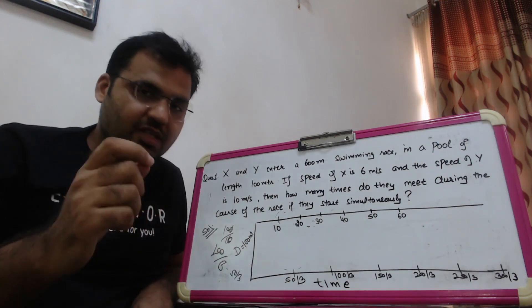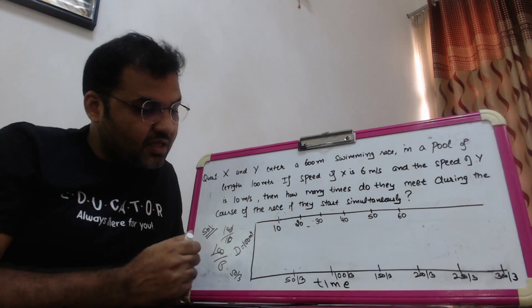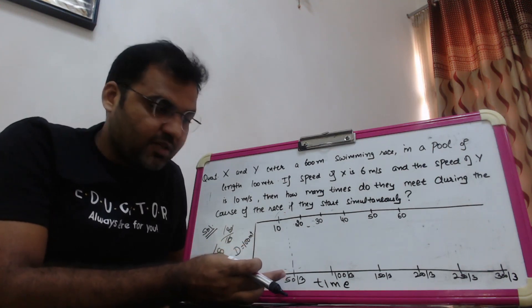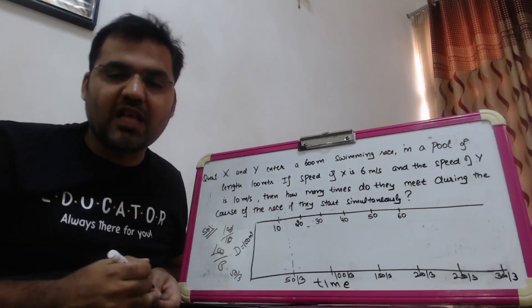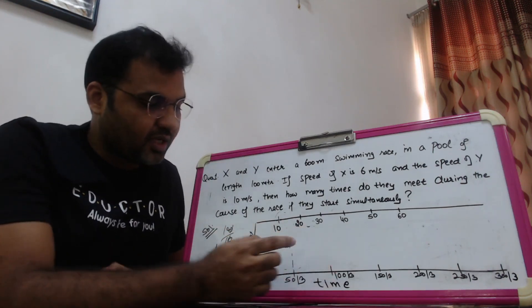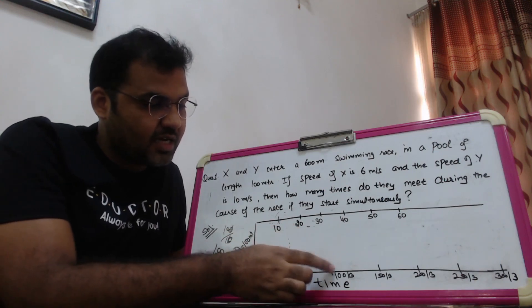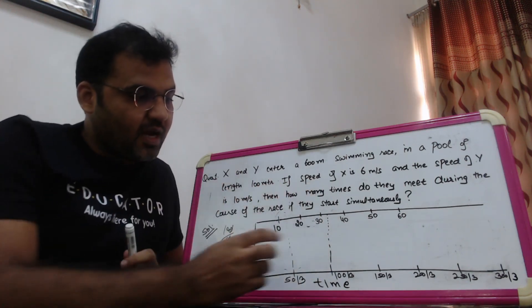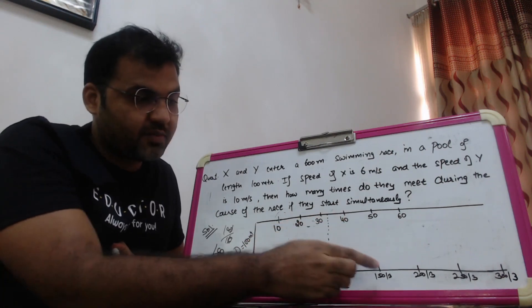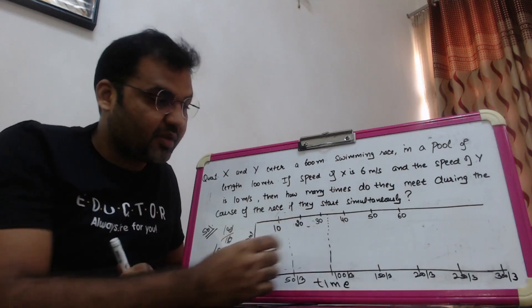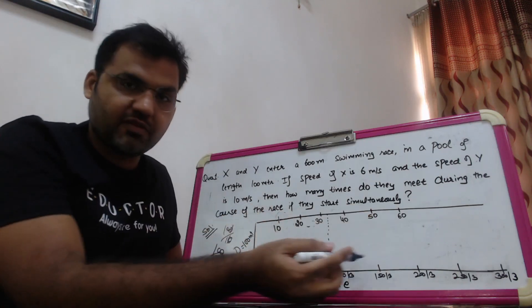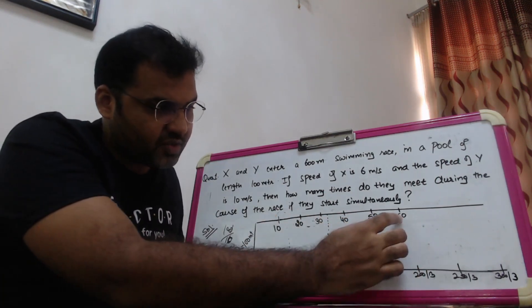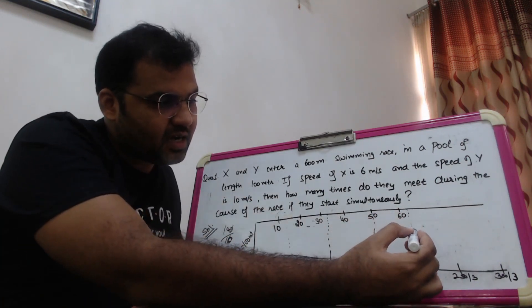One thing you need to keep in mind: 50/3 is 16.67, and the 10 point should come at 50/3. These are two time lines. So 50/3 comes here, which is 16.67, so 10 will come to the left of this line. If we talk about 20, 100/3 is 33.33, so 20 comes after 50/3 but before 100/3. Keep in mind that 100/3 is 33.33, so 30 comes to the left. 40 seconds - 33.33 is less but 150/3 is 50, so it comes to the left of this. 50 and 150/3 are the same, 150/3 is also 50, so they come exactly opposite each other.